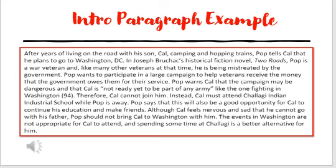Therefore, Cal cannot join him. Instead, Cal must attend Chilagy Industrial School while Pop is away. Pop says that this will be a good opportunity for Cal to continue his education and make friends. Although Cal feels nervous and sad that he cannot go with his father, Pop should not bring Cal to Washington with him. The events in Washington are not appropriate for Cal to attend, and spending time in Chilagy is a better alternative for him.